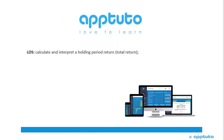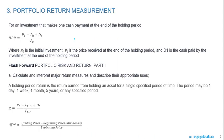This LOS is to calculate and interpret a holding period return, total return. For an investment that makes one cash payment at the end of the holding period, the holding period return is the ending price minus the beginning price, plus any cash flows that we receive — for example, like a dividend — divided by the beginning price.